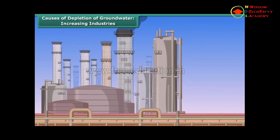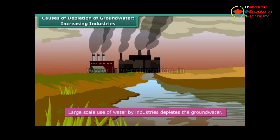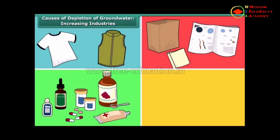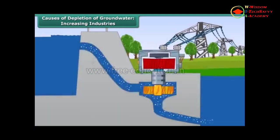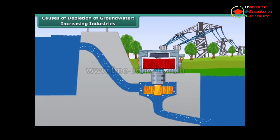Industry forms the backbone of the modern world. It is impossible to imagine life without industries. Almost all the products that we use in our daily lives — such as clothes, paper, medicines, cosmetics, etc. — are industrial products. Industrialization is an ongoing process that will never come to an end. New industries are being set up every day to meet the growing needs of a rising population. These industries draw tons of ground water every day for use in production processes, thereby depleting it.